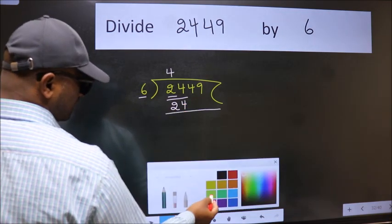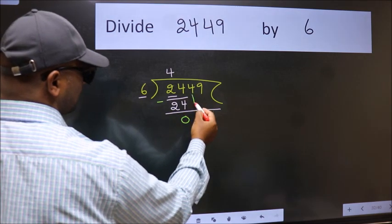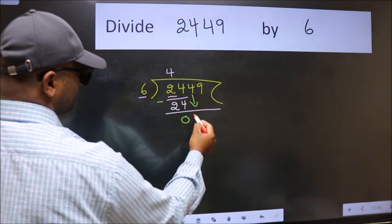Now we should subtract. We get 0. After this, bring down the beside number. So 4 down.